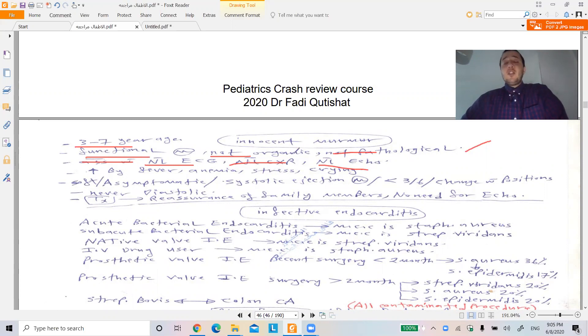Increased by fever, it's called murmur. It's increased by fever, anemia, stress, crying, exercise. If the child plays or exercises, the murmur is increased.